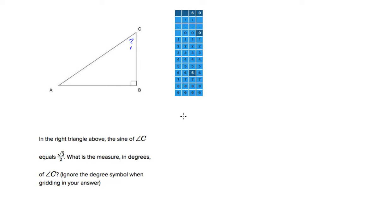Let's first talk about how you find the sine of an angle. To find the sine of an angle in a right triangle, you take the opposite side and divide it by the hypotenuse of that right triangle. So given that the sine of angle C equals root 3 over 2, that means the side opposite angle C has to be root 3 and the hypotenuse has to be 2.